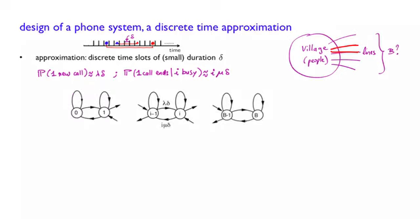So the states are numbers from 0 to B. 0 corresponds to a state in which all the phone lines are free. No one is talking. B corresponds to a case where all the phone lines are busy, and then you've got states in between.